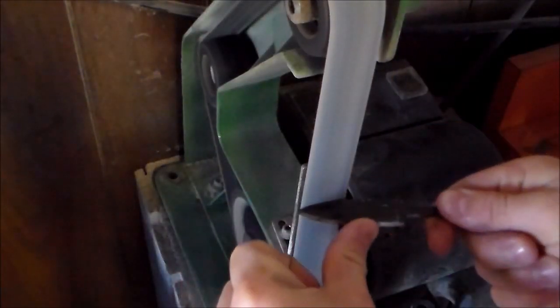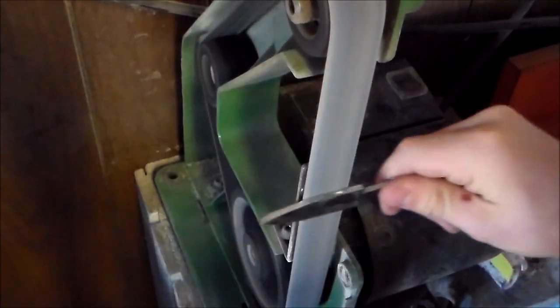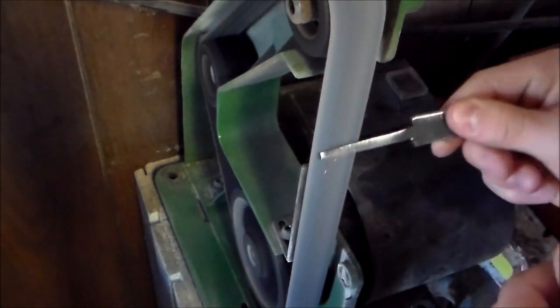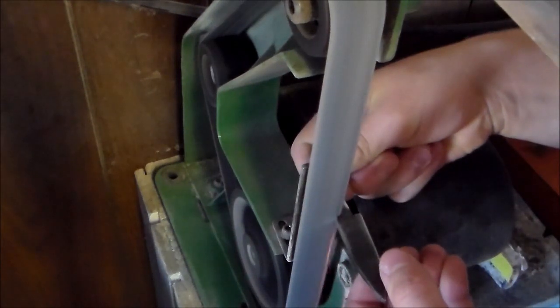Then we'll take it over to the belt sander and clean up the profile. And I'm using a 40 grit belt because that's going to take off material a lot quicker than a 120 grit belt. However, it is going to leave a rougher finish, but that doesn't matter at this point.